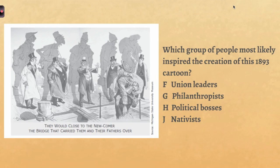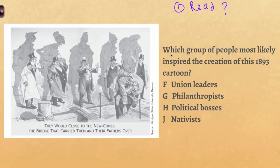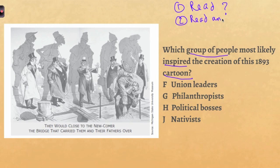When you get to the test, here's how this question might be assessed. This is from the US History EOC. We have a political cartoon, and whenever I have a political cartoon on a test, I want to make sure I look at all the pieces. But first, read the question. Anytime you have a question with a visual, the first thing you need to do is read the question and know what they're asking. The question asks: which group of people most likely inspired the creation of this 1893 cartoon?